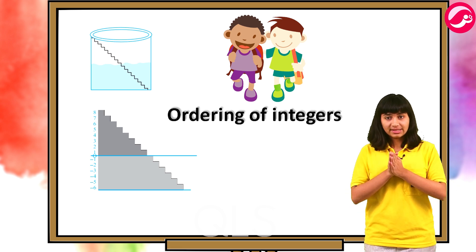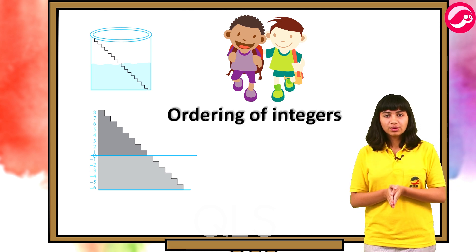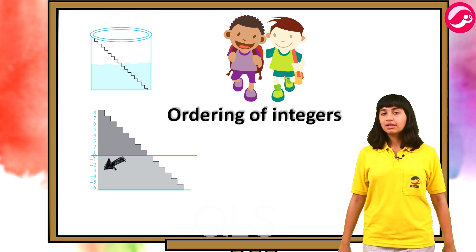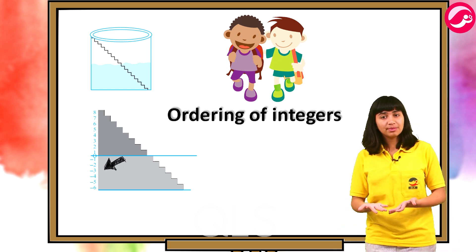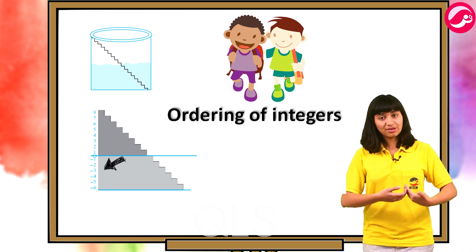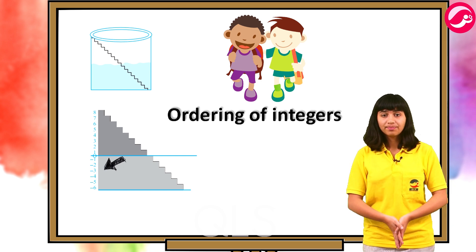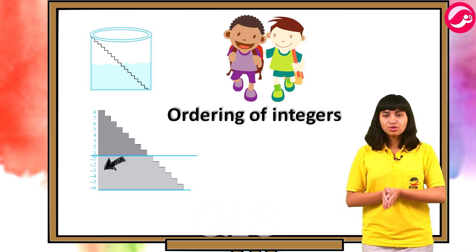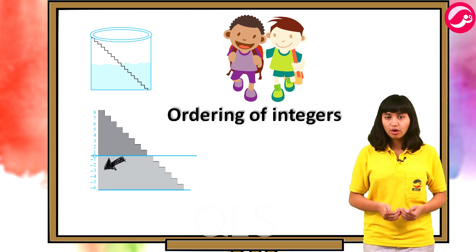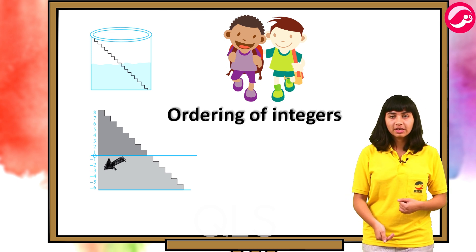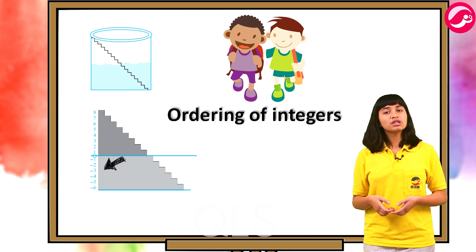Water level rise ho gaya. After a few months they noticed that the water level had fallen three steps below the zero mark. Garmiyon ke baad jo water level tha woh zero se teen steps neeche chala gaya. They started thinking about marking the steps to note the fall of water level — paani ka level jo kam hua unhone woh bhi mark karna tha.